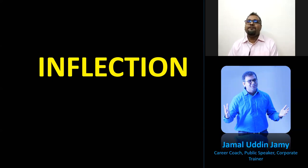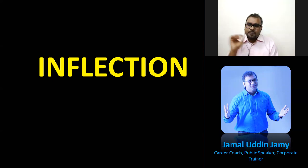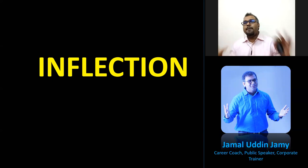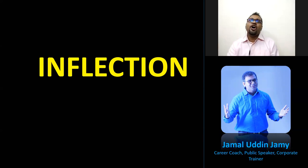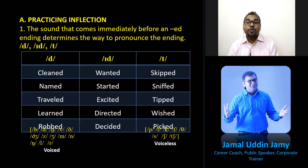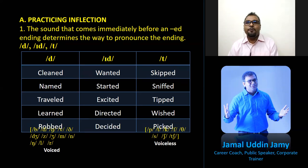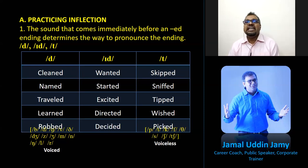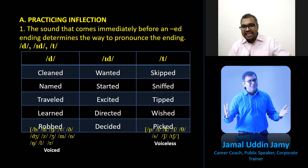Today we are going to talk about a very important topic: inflection in rapid speech. Inflection occurs especially for people from India, Bangladesh, Pakistan, Sri Lanka — this subcontinent. We do have a lot of mistakes with inflections. The sound that comes immediately before an -ed ending determines the way to pronounce the ending: 'da,' 'id,' or 'ta.'